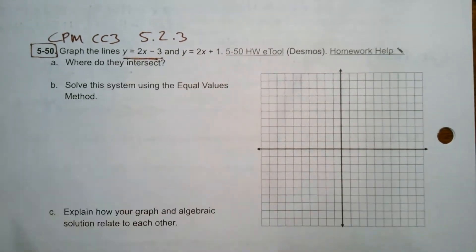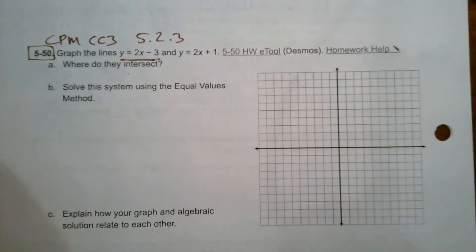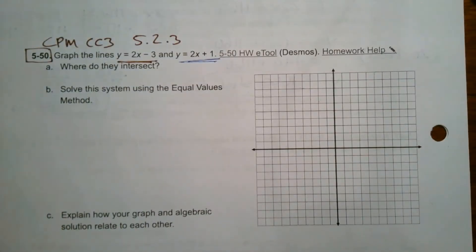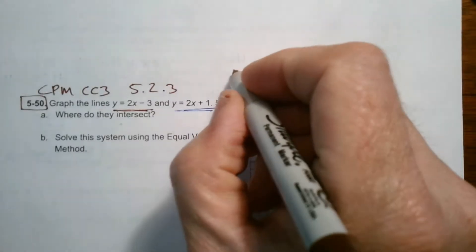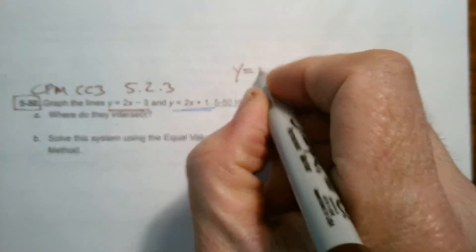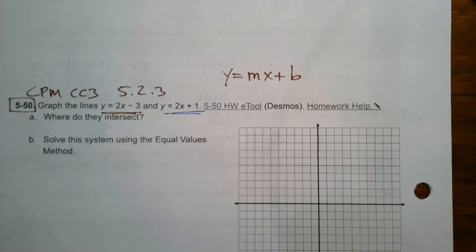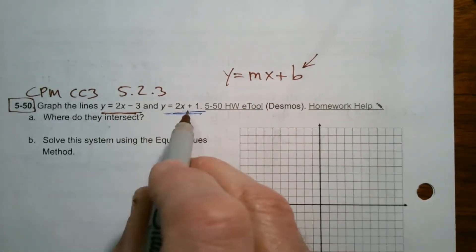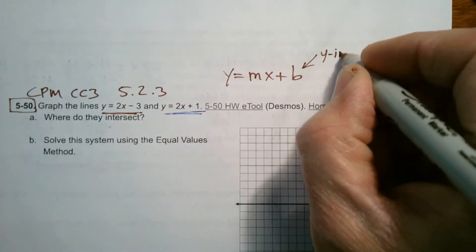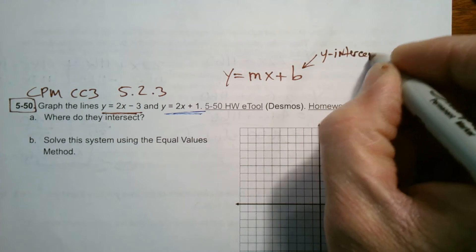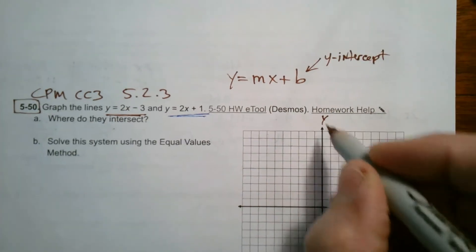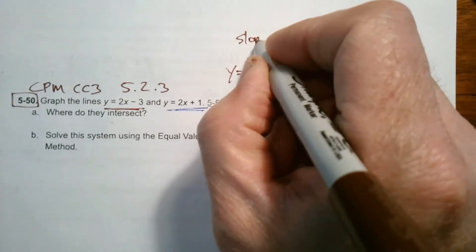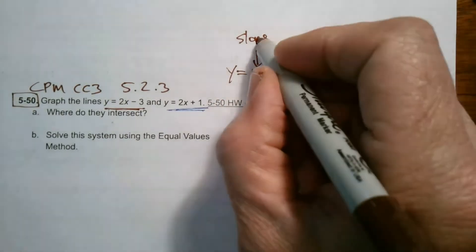We have y equals 2x minus 3, and then y equals 2x plus 1. Remember graphing — we're going to use the form y equals mx plus b to help us graph. The b represents the y-intercept, where it crosses the y-axis. The m represents the slope, or the growth from point to point.